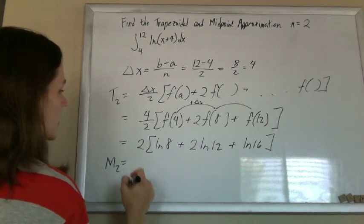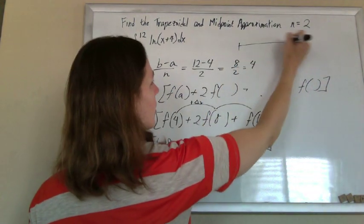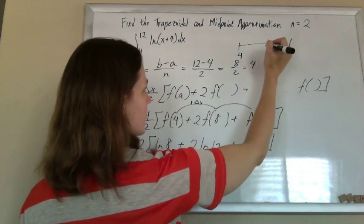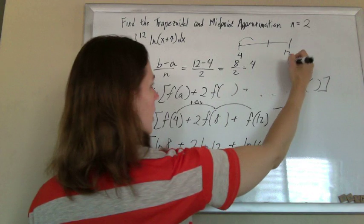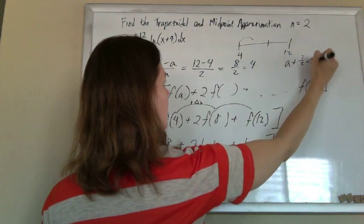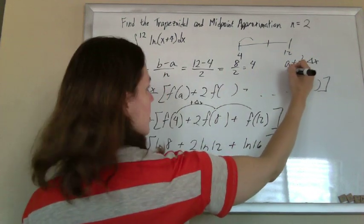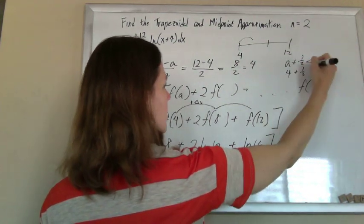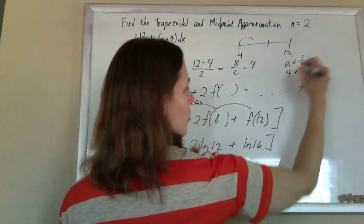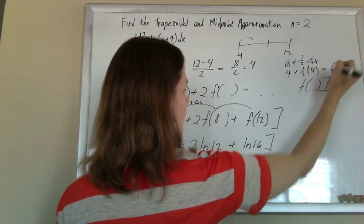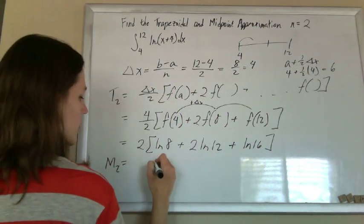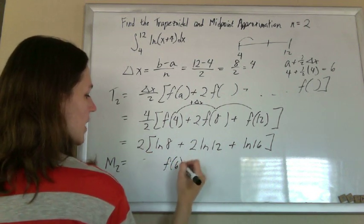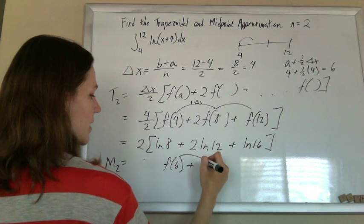Instead of starting at a, if you're going from 4 to 12, you want to start at a plus half of delta x. So here we're going to start at 4 plus half of delta x is 4. So 4 plus half of 4 is 6. So start at f of 6, and then just keep adding delta x.